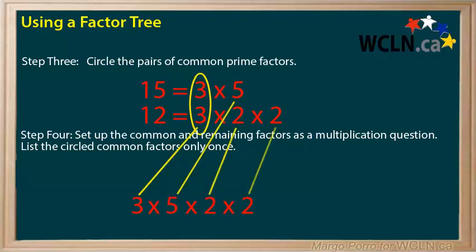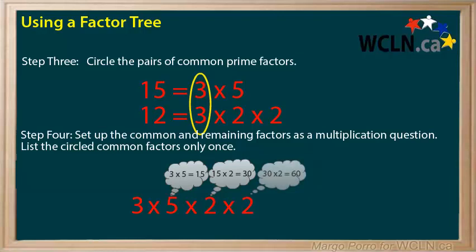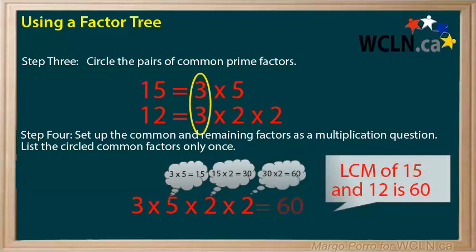5, 2 and 2 are the remaining prime factors. Finally, you can multiply. 3 times 5 times 2 times 2. 3 times 5 is 15. 15 times 2 is 30. And 30 times 2 is 60. We say that the lowest common multiple of 15 and 12 is 60.